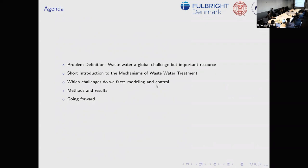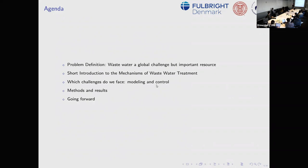I'll talk about the mechanisms, our early work and results, but I also want people to think about this as a big challenge and how those with CS backgrounds can help. Our focus is modeling and control, where we use deep learning to facilitate specifically the modeling and parts of the control, with the final goal being optimization of the system.